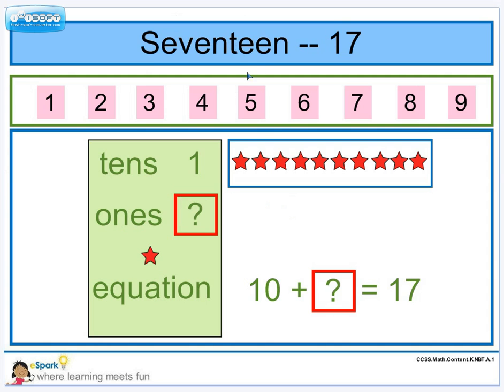Let's do a couple more. 17. Let's count how many 1s. 1, 2, 3, 4, 5, 6, 7. So I have one group of 10. I have 7 1s. I'll pull my number down. And I'll also pull it down here so that I can complete my equation. 10 plus 7 equals 17.